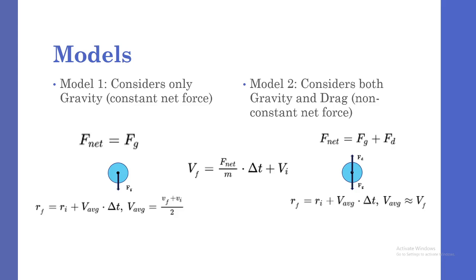I used GlowScript to create two different models. The first only considers gravity for the net force, the second one considers gravity and the force of drag. Both use a rearrangement of Newton's second law to update the velocity. However, they differ in their calculation of the updated position.